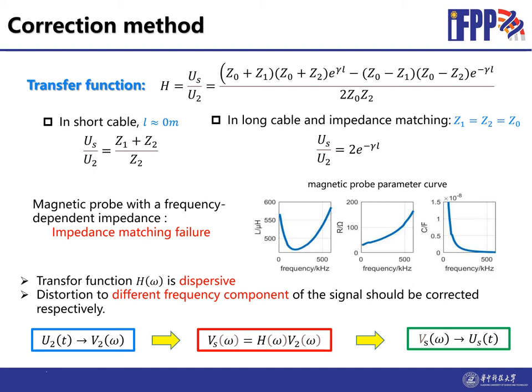However, in practice, the impedance of the magnetic probe varies with the frequency, such as the measured results in this figure. Here the inductance, resistance, and the capacitance all vary with the frequency. So the impedance matching cannot satisfy at all frequencies. Now we must come back to the full transfer function and the function is related to the frequency. So it's dispersive. The distortion to different frequency components of the signal should be corrected respectively.